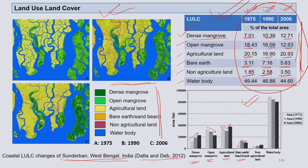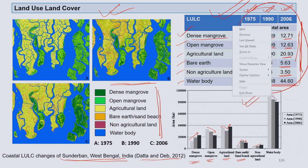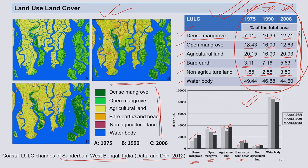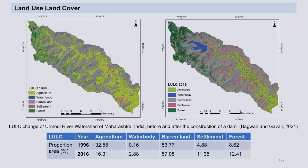Bare earth has gone up and then come down. Non-agricultural land is almost non-significantly increasing. Water body shows a little decrease, possibly due to various reasons, but overall it is not alarming as seen from these datasets. The point is to show how remote sensing and GIS can help you understand what a system is going through.